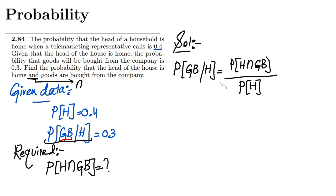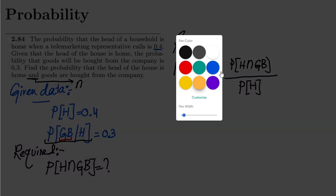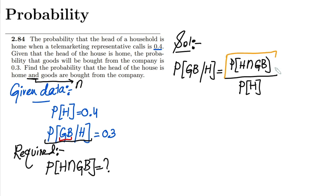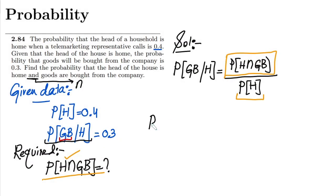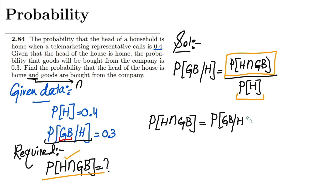Now, in order to find the quantity we want, we multiply both sides by P(H). What I will get is: P(H ∩ GB) is equal to the probability of GB given H, multiplied by the probability of H.